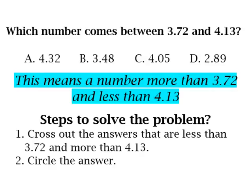The steps to solve this problem are the following. Number one, we are going to cross out the answers that are less than 3.72, because remember we said if it's in between we need numbers that are more than 3.72. And also we want to cross out numbers that are more than 4.13, because if it's in between 3.72 and 4.13, anything over 4.13 would not be in that range. And finally we are going to circle the answer.